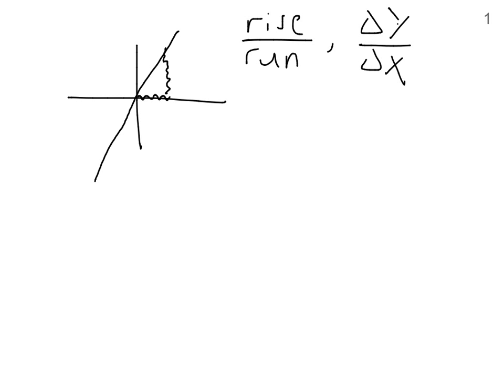And for this function, you have the same slope throughout. Here the slope is 2, here the slope is 2, the slope is 2 everywhere.